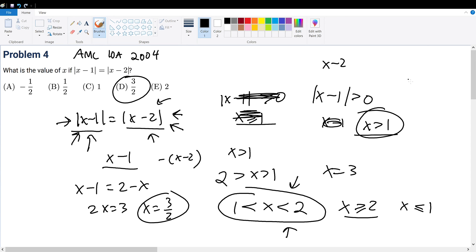So x minus 2 will be the same thing as x minus 1. We cancel out the x. Negative 2 equals negative 1. That's obviously wrong. So this case will not work.